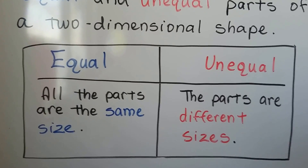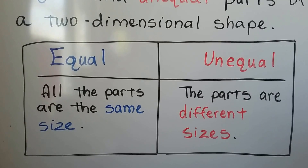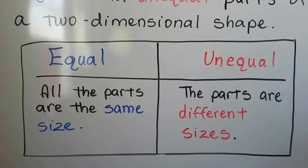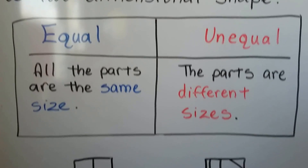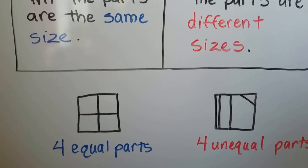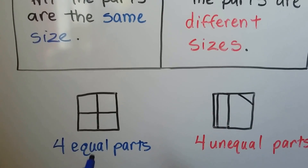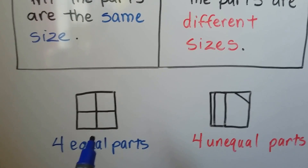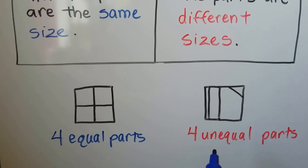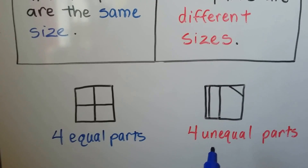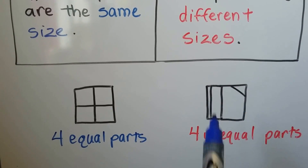If they're equal, all the parts are the same size. If they're unequal, the parts are different sizes. Here we have a square that's cut into four equal parts. Here we have a square that's cut into four unequal parts — see how they're all different sizes?